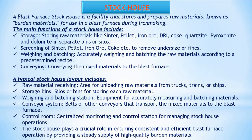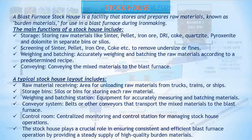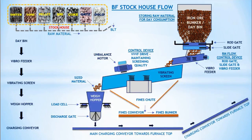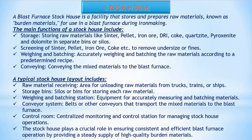A typical stock house layout includes: raw material receiving — area for unloading raw materials from trucks, trains, or ships; storage bins — silos or bins for storing each raw material; weighing and batching station — equipment for accurately measuring and batching materials; conveyor system — belts or other conveyors that transport the mixed materials to the blast furnace; and a control room — centralized monitoring and control station for managing stock house operations. The stock house plays a crucial role in ensuring consistent and efficient blast furnace operation by providing a steady supply of high-quality burden materials.